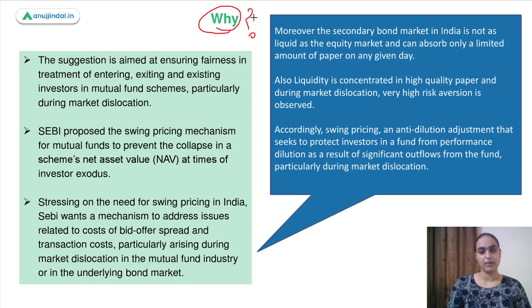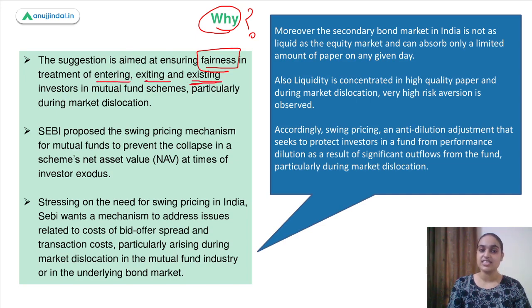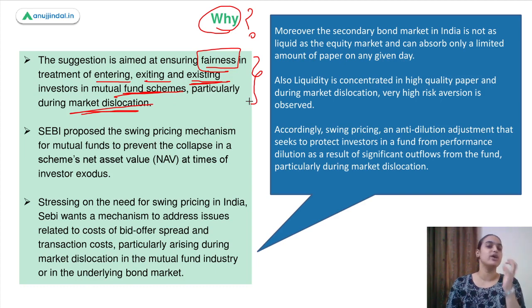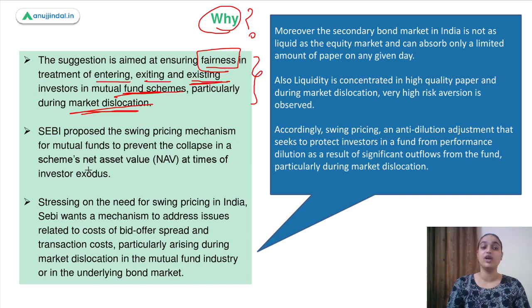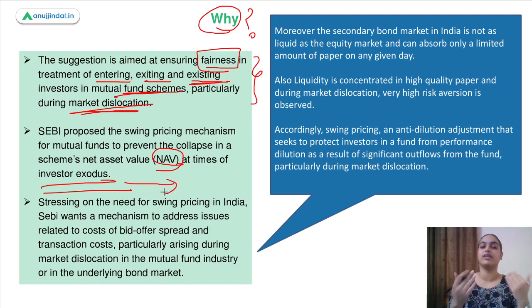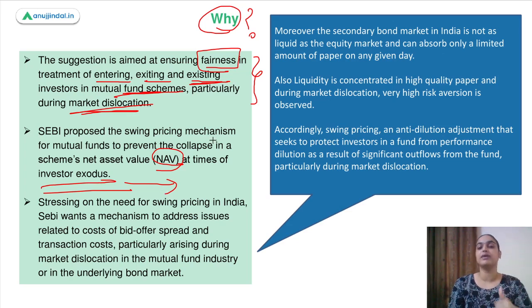SEBI has come up with this proposal to ensure fairness in treating investors who enter, exit, or are already in the mutual fund category during market dislocation. SEBI proposed this mechanism to prevent the collapse in net asset value at times of investor exodus. When a large number of investors come together and start withdrawing their money, the net asset value of that mutual fund will collapse — and to prevent that, this mechanism is useful.